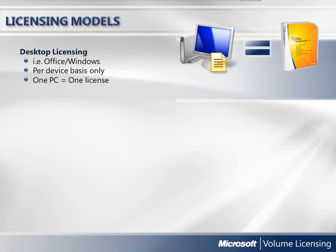Desktop software, such as Microsoft Office or Windows software, are licensed on a per device basis only. That means for each PC or device that has the software installed, you must have an accompanying license for that software. An easy way to remember this is: one PC equals one license.